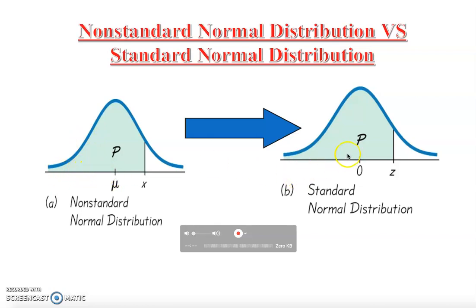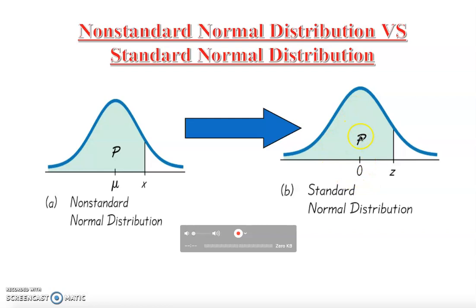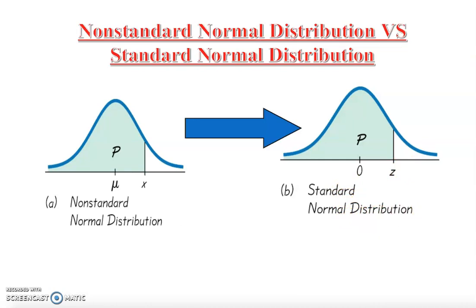It starts on the left going up and coming down — symmetric on both sides. I don't want to label this as a z-score line, because this is non-standard: your mean is not zero and your standard deviation is not one. Whereas the other one is a z-score line because it has been converted into a z-score, making it a standard normal distribution using a conversion formula.